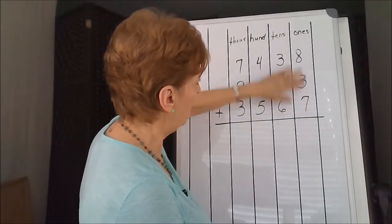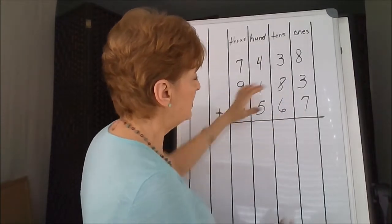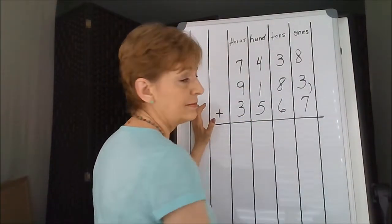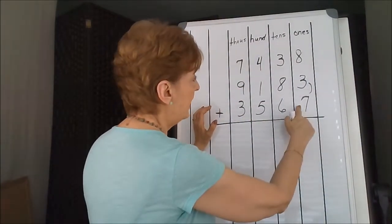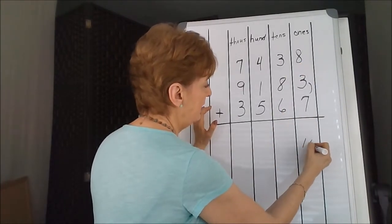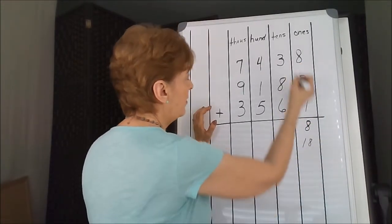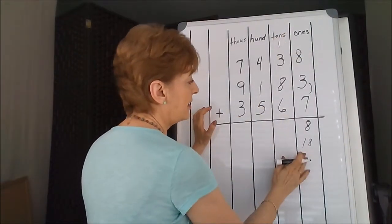In the ones column, that's where you always start. I see a group of 10 here. Do you see it? So 10, and that would be 18. I'm going to put down the 8, carry the 1 to the next column.